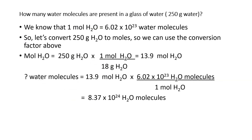Another example: how many water molecules are present in a glass of water? A glass of water approximately has a mass of 250 grams. We know that 1 mole of water is equal to 6.02 times 10 to the 23rd water molecules. Let's first convert 250 grams of water to moles using the molar mass of water as the conversion factor. The result is 13.9 moles of H2O.